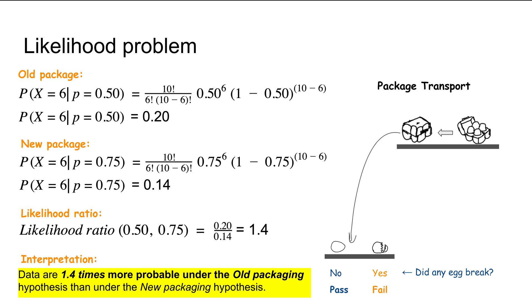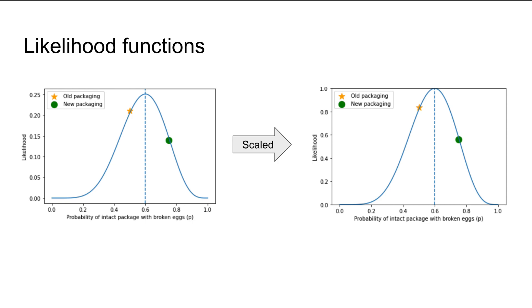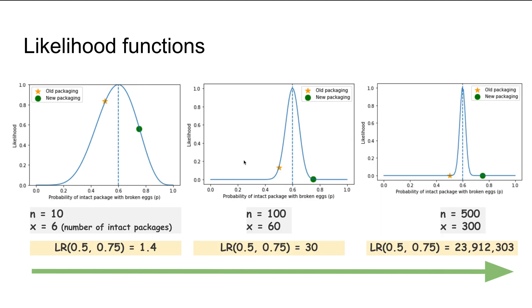In this plot on the left-hand side, we have the likelihood function, and on the right is the same likelihood function scaled to 1. There are two points: the orange point is the probability of 0.5 for old packaging, and the green point is for new packaging, which is probability 0.75. The reason to show this is so we can look at the series of these plots.